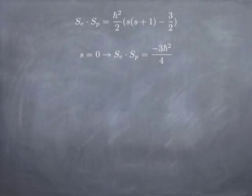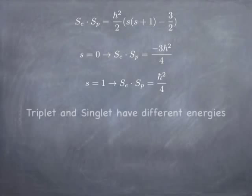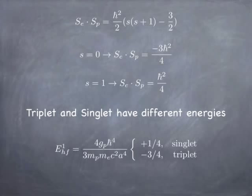Of course, the other option is that it's the s equals one case. The two spins add to make a total spin of one. And if you plug that into the expression for se dot sp, you get h-bar squared over four. And since the perturbation energy is proportional to se dot sp, that means the triplet and the singlet states, while they're degenerate if you don't include this interaction, if you do include it, you get a difference in energy.